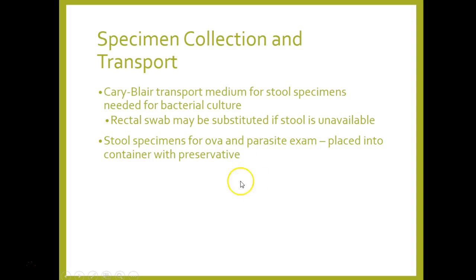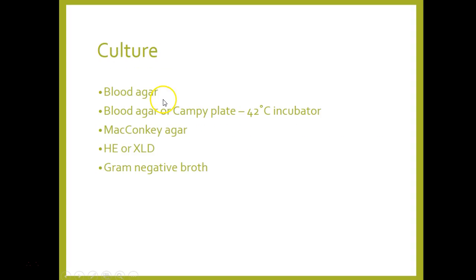For specimen collection and transport, you can do a rectal swab, but we prefer stool samples, which go into a bottle with preservative. Commonly with stool cultures, they also order an OVA and parasite, which also goes in a bottle with preservative. In the lab, we plate blood agar, set up an extra plate into a 42-degree environment for Campylobacter, plate MacConkey, and use HE or XLD for Salmonella-Shigella screening. A MacConkey sorbitol plate can also be set up to screen for E. coli O157.